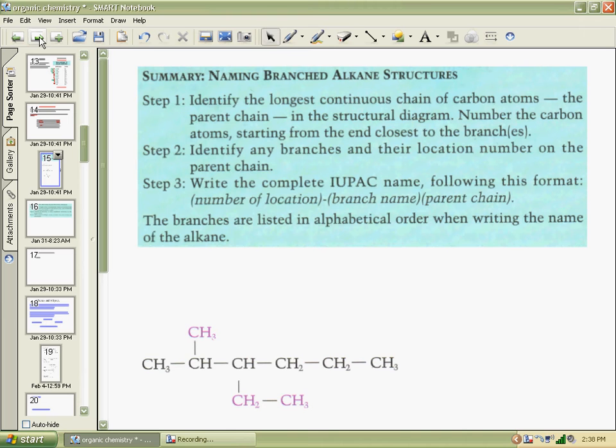So our steps are: Step one, identify the longest continuous chain of carbon atoms, which we'll call the parent chain, and we'll number them starting from the end closest to the branches, or the end closest to where any double bonds would occur as well. Step two is to identify the branches and their location on the parent chain. Then we're going to write the complete IUPAC name, following the format of the number of where it is, what the name of the branch is, and then the parent chain. The branches are listed in alphabetical order when writing the name of the alkane.